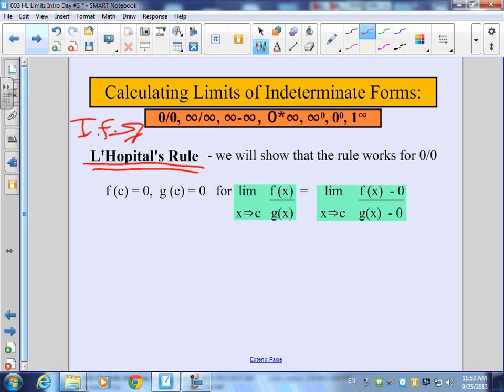Infinity minus infinity doesn't happen a lot. 0 times infinity happens sometimes. Infinity to the 0? A few times. 0 to the 0. 1 to the infinity is the most common one of all those uncommon ones. 1 to infinity could be e. Justin, are you with us here? Copy these down, please.